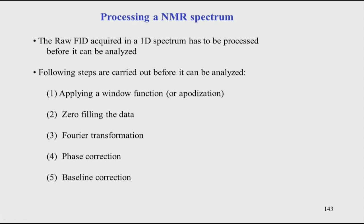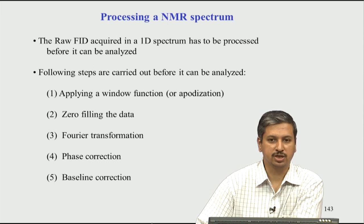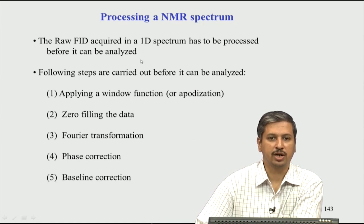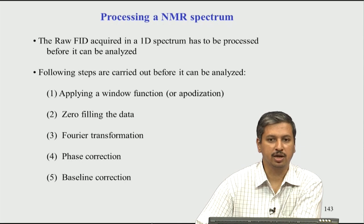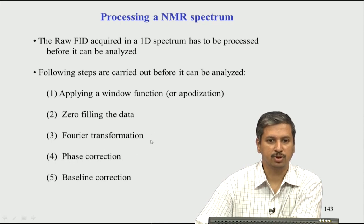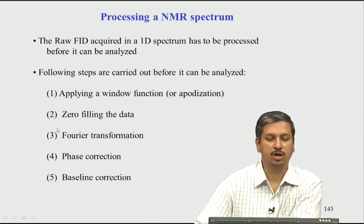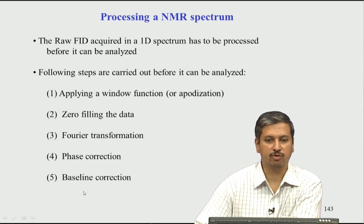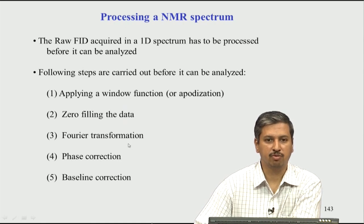Once the NMR data is recorded, the next step is processing the data. The raw data that comes out of the NMR is called the FID, and this is not the spectrum — the spectrum still has to be obtained by massaging the raw data. The raw data is processed through many steps and then converted into a spectrum by Fourier transform. Even after Fourier transform, the data is not completely ready to analyze — there are further operations to do on the NMR spectrum before it is ready for analysis.